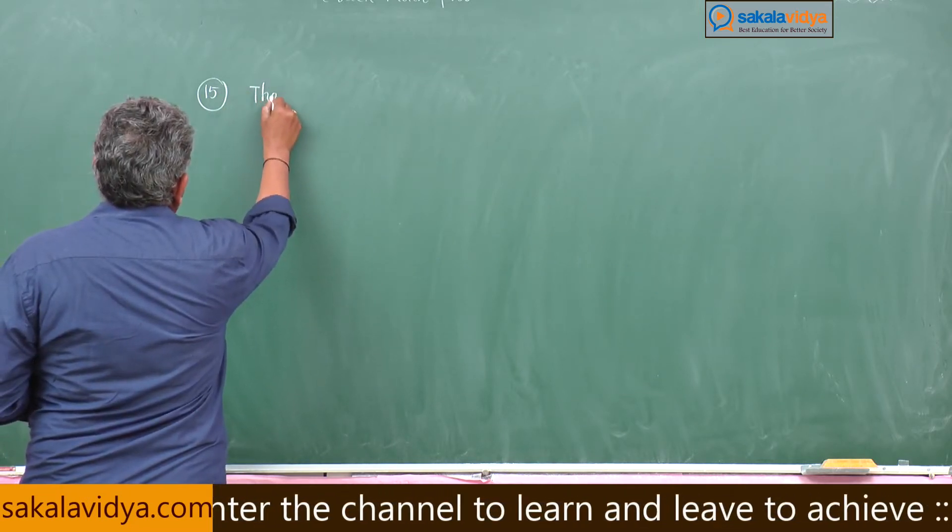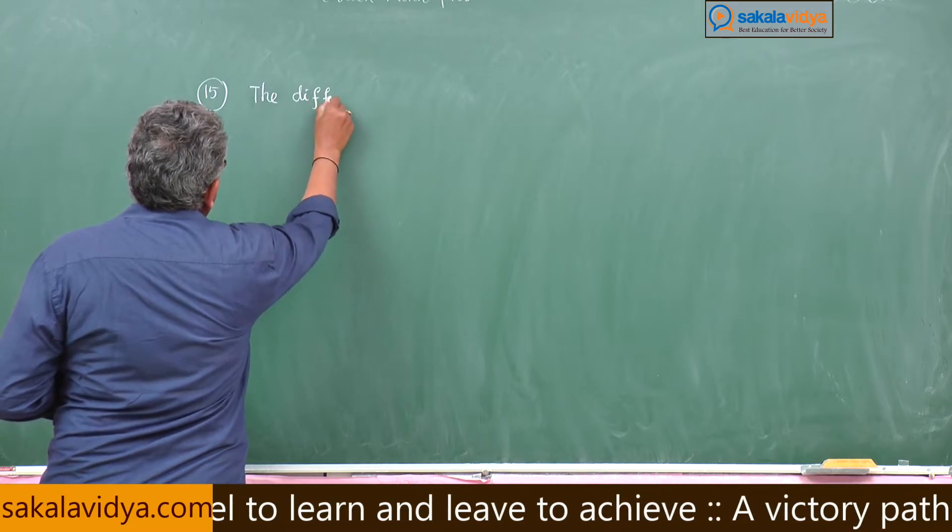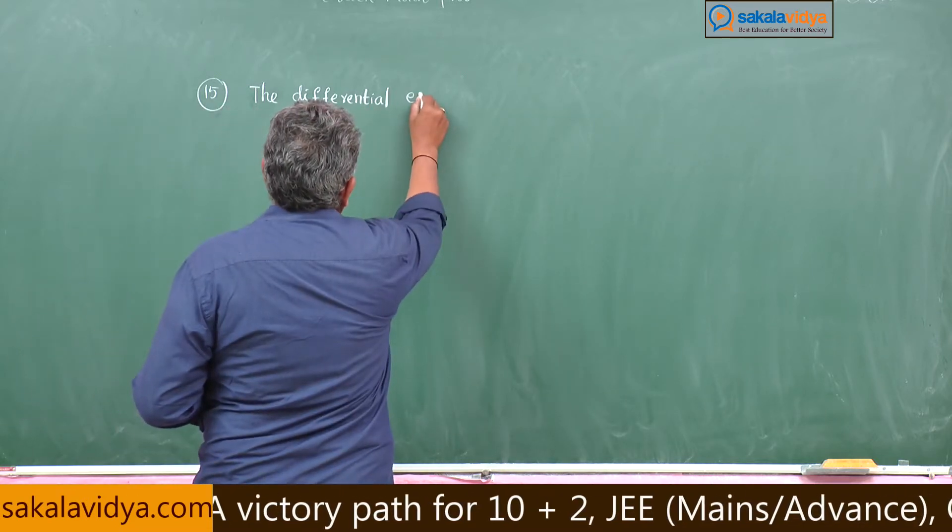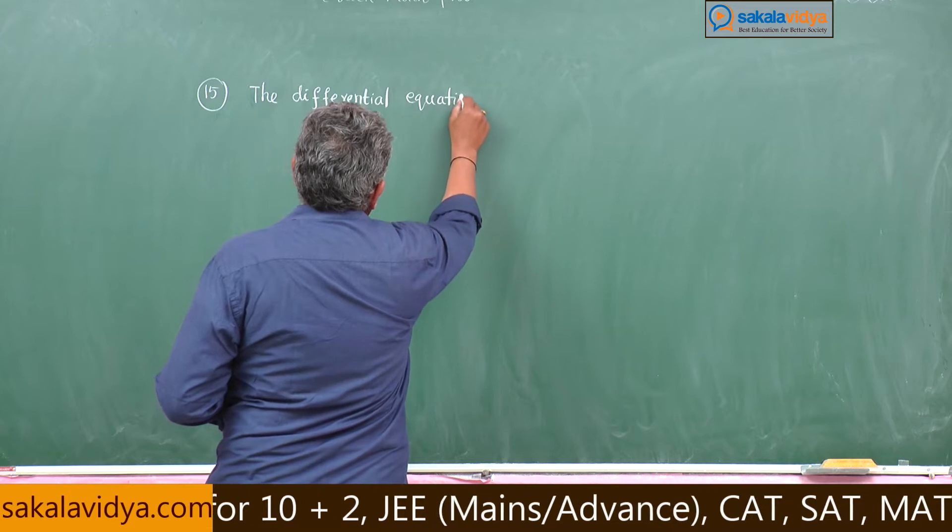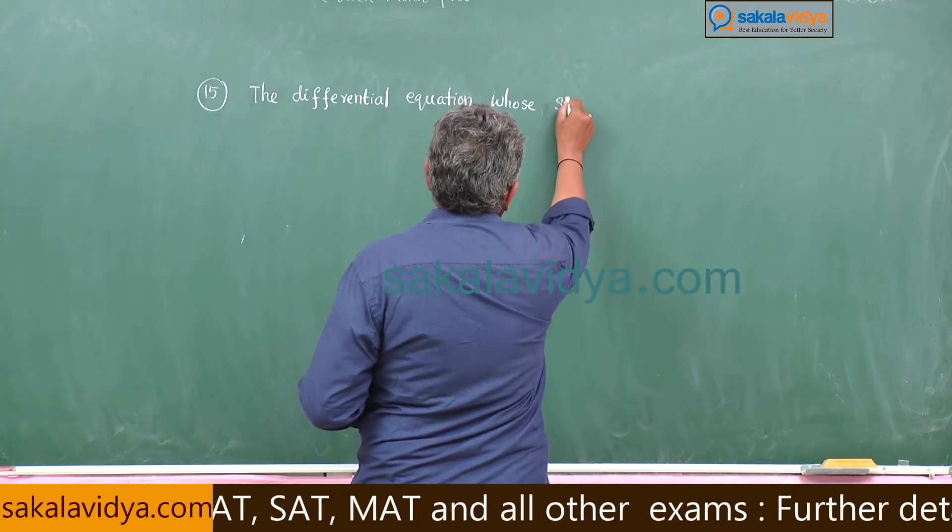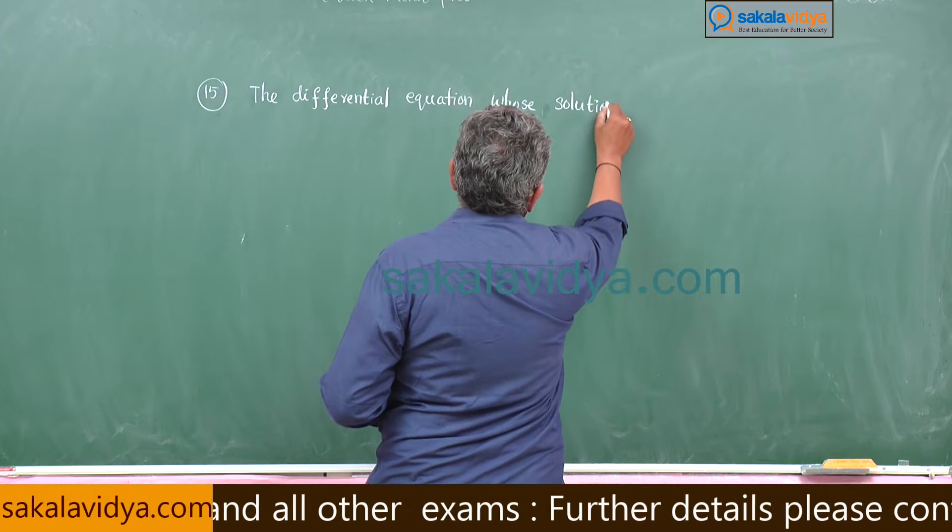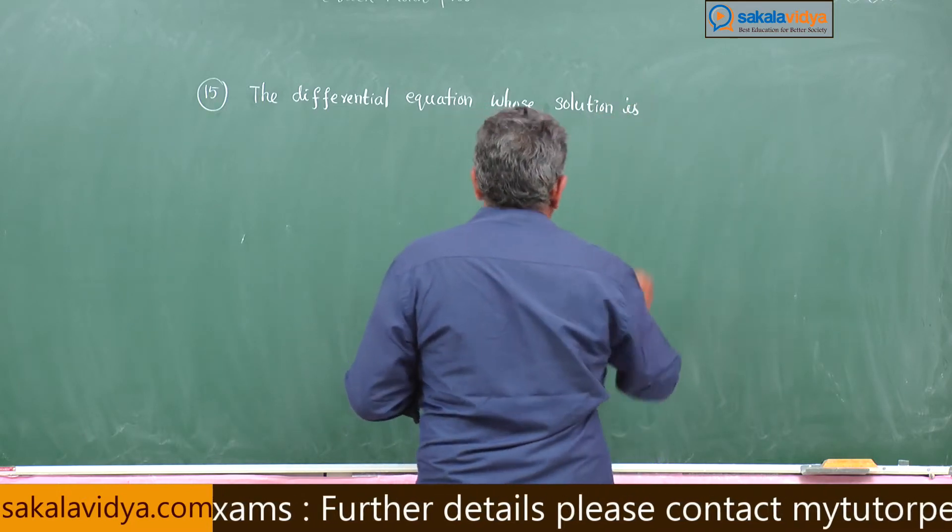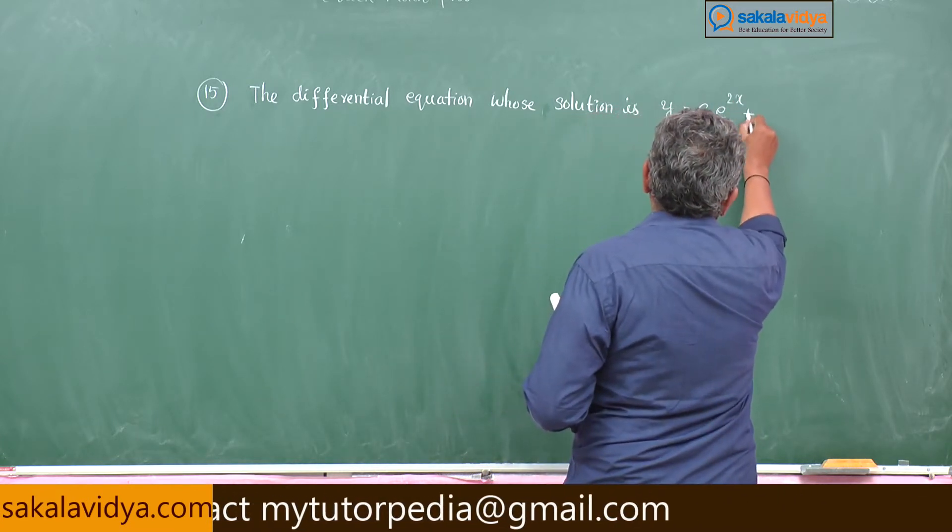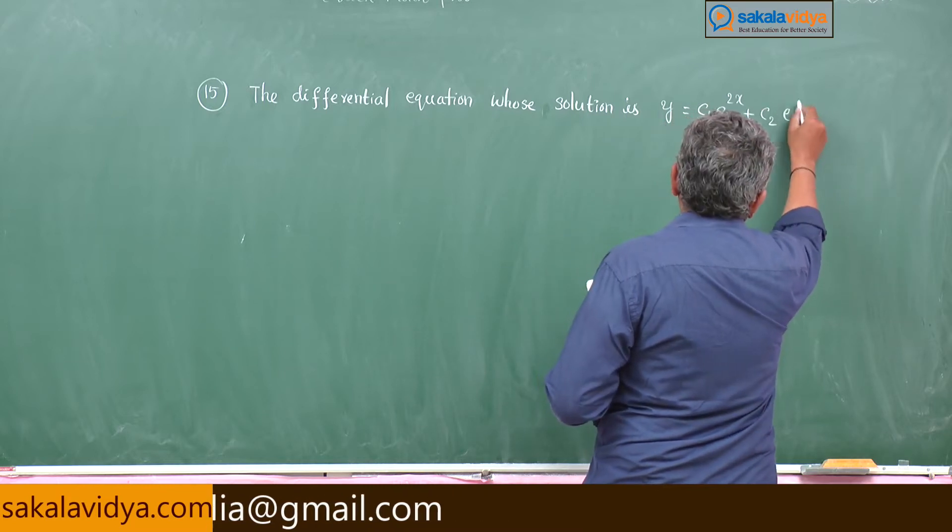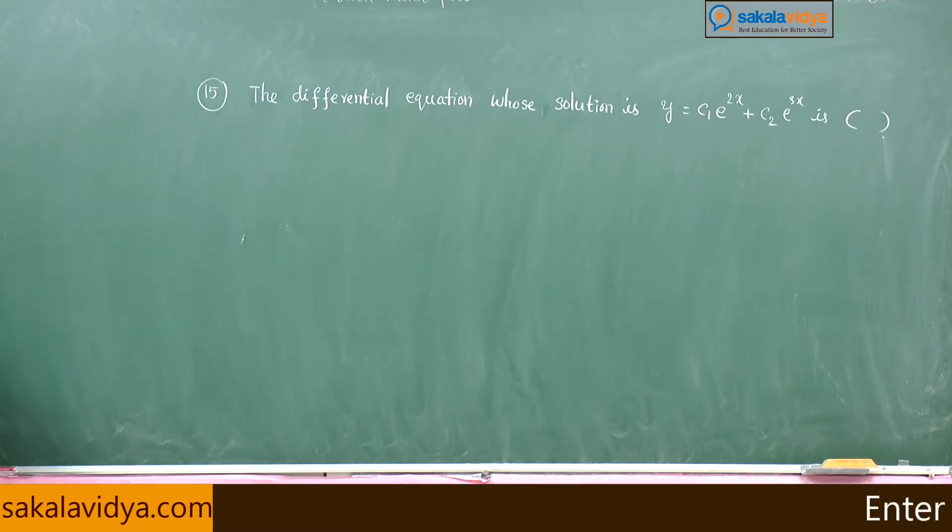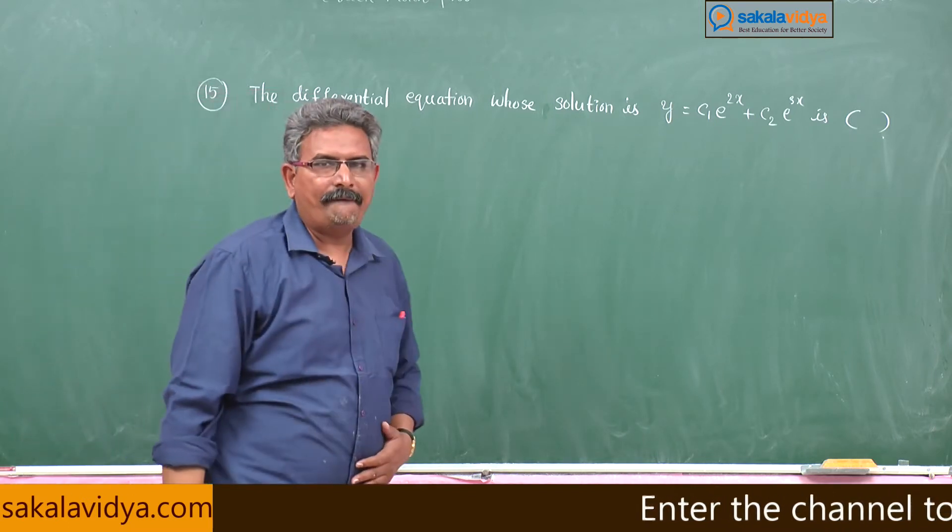Problem 15: The differential equation whose solution is y equals c1 e to the power of 2x plus c2 e to the power of 3x, where c1 and c2 are arbitrary constants. Here two arbitrary constants are given, this is standard form.